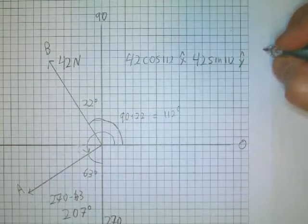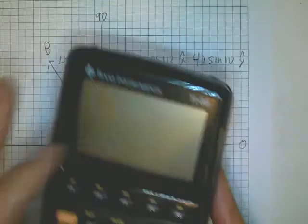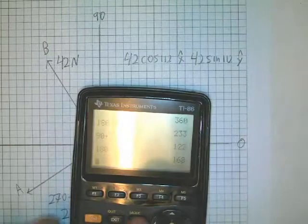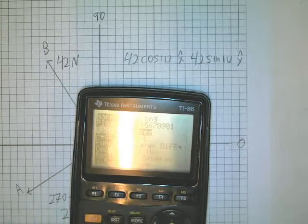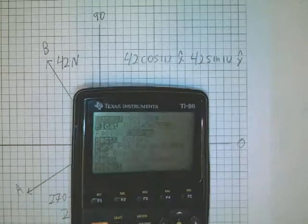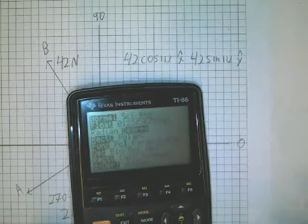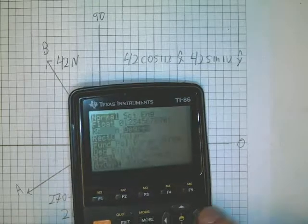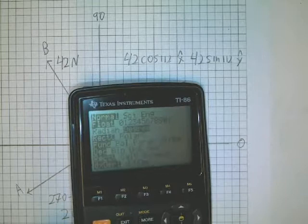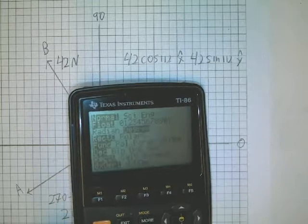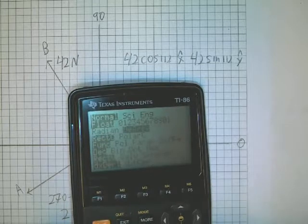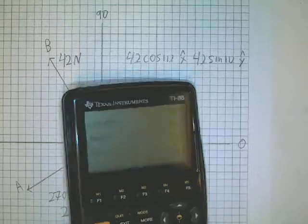All right, so take your calculator, turn it on. First thing is check the mode. You might have to do mode or second mode. And then just make sure we're using degrees. Make sure that this guy is over degrees like that. If it's not, make it over degrees, hit enter, and then you can clear, and then you're set.